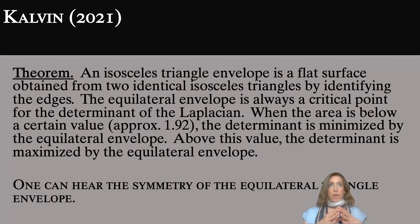which is a surface obtained by gluing together two identical isosceles triangles along the edges, thereby creating a flat smooth surface that has three conical singularities. The equilateral envelope is always a critical point for the determinant,